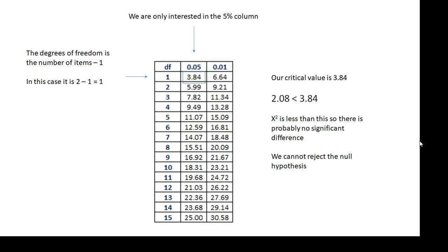So, 2.08 is less than 3.84. The chi-squared value is less than the critical value, and that means there is probably no significant difference. We cannot reject the null hypothesis — we can probably say that the difference is not significant.